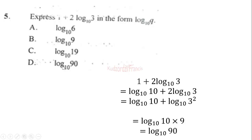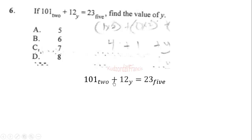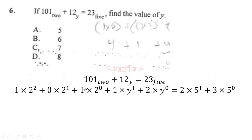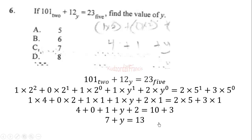Question 6: if 101 base 2 plus 12 base y equals 23 base 5, find the value of y. Convert all numbers to base 10 by multiplying by the respective base values. Simplifying gives 7 + y = 13, therefore y = 6. The correct answer is 6.